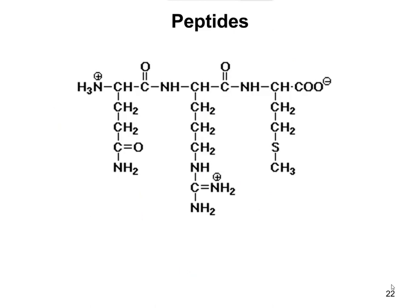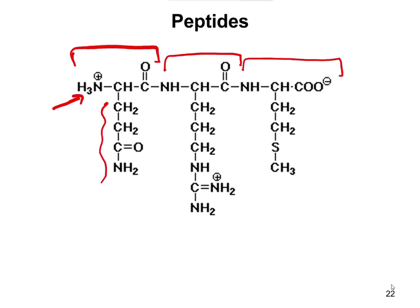Here's another example looking at a peptide with three amino acids. The repeating units are NH3CHC=O, NHCHC=O, and NHCHC=O. The N-terminal amino acid is the one on the left with the free NH3+. You identify it by the side chain — in this case the N-terminal amino acid is glutamine (GLN). The middle one is arginine. The one on the right, which is also the C-terminal amino acid, is methionine (MET).